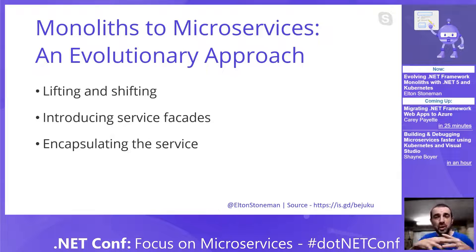Now the product team can do the update they want — moving to Cosmos instead of the internal SQL database. The change to the product service is really just a tiny configuration change. It's already got the code to use Cosmos, I've already preloaded the data into Cosmos. So now it's going to be looking at Cosmos DB for the data.